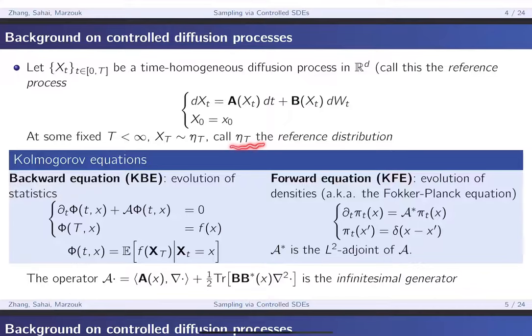We'll give you some tools typically used in stochastic differential equations — namely the Kolmogorov equations, which will be very important in our work. You may have heard of the forward Kolmogorov equation, or more often the Fokker-Planck equation, which describes how the system's marginal density evolves over time given an initial condition at x'. More importantly, we'll be looking at the Kolmogorov backward equation, which describes the evolution of statistics: given a terminal condition f(x), how does the expectation evolve over time? Both equations depend on the infinitesimal generator, a common tool in stochastic analysis.